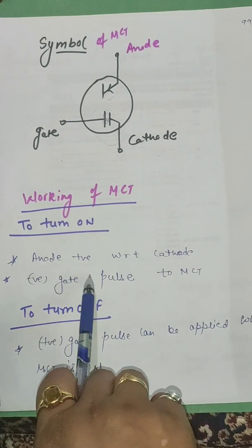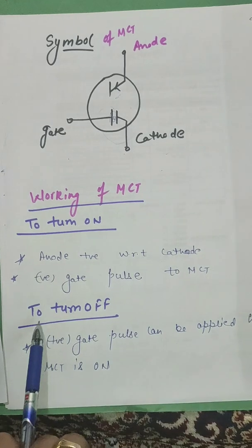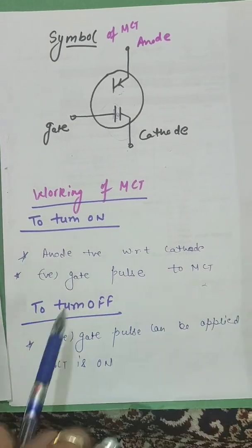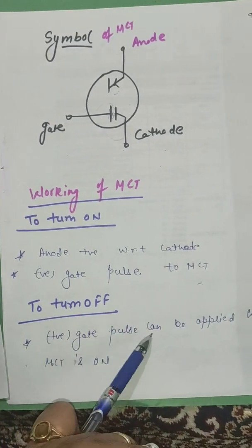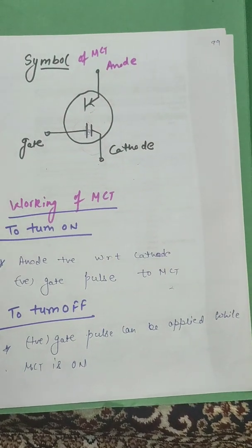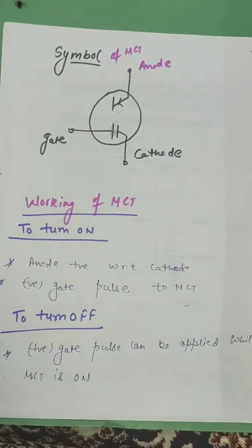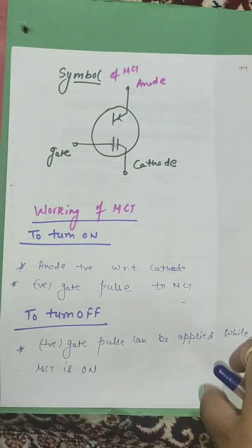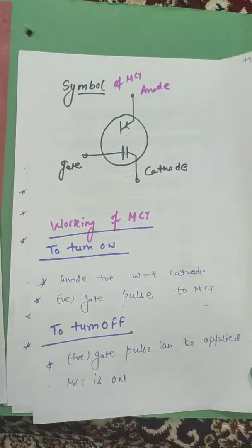To turn on anode positive with respect to cathode, negative gate pulse to MCT and to turn off positive gate pulse to MCT. While MCT is on, we should give the positive gate pulse to MCT. It will turn off.